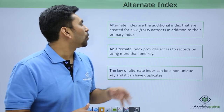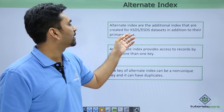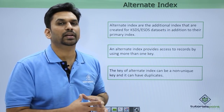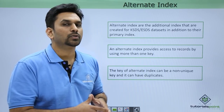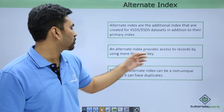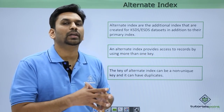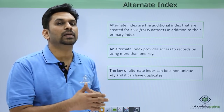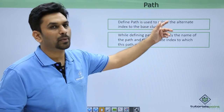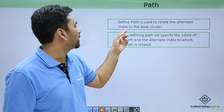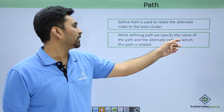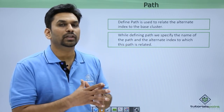Alternate indexes are additional indexes created for KSDS data sets in addition to their primary index. Alternate index provides access to records by using more than one key. The keys do not all need to be unique — you can use a non-unique key as well. You then need to define a path: DEFINE PATH is used to relate the alternate index to the base cluster, specifying the name of the path and the alternate index it is related to.